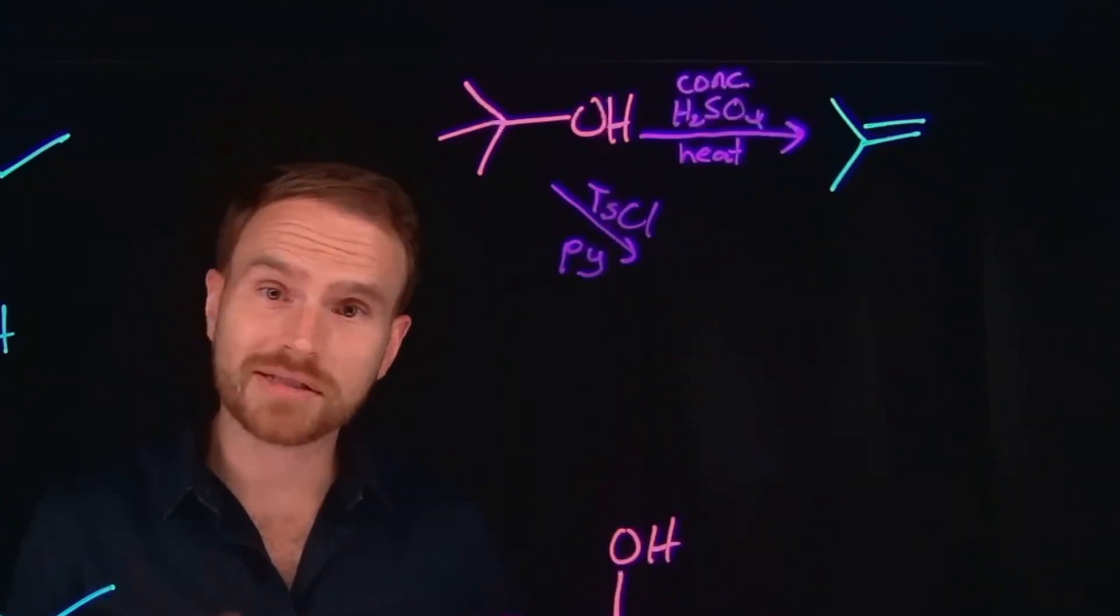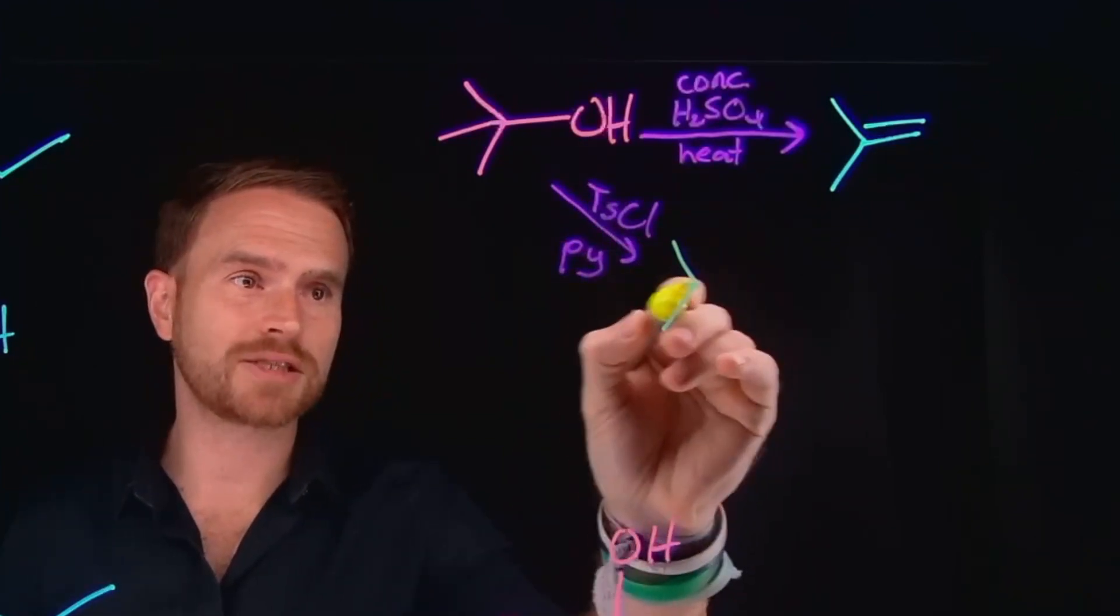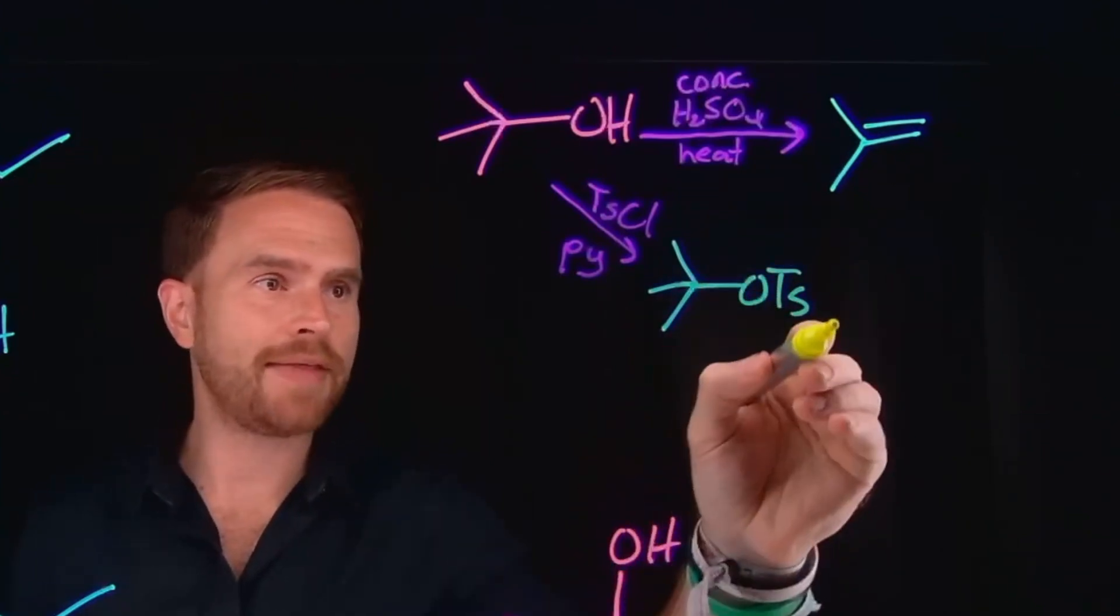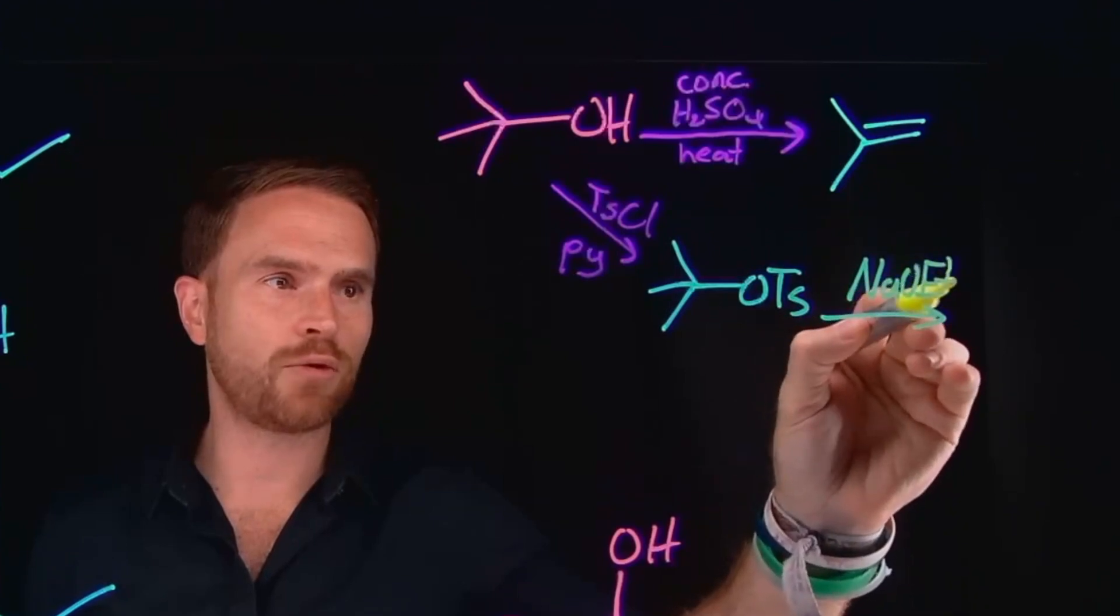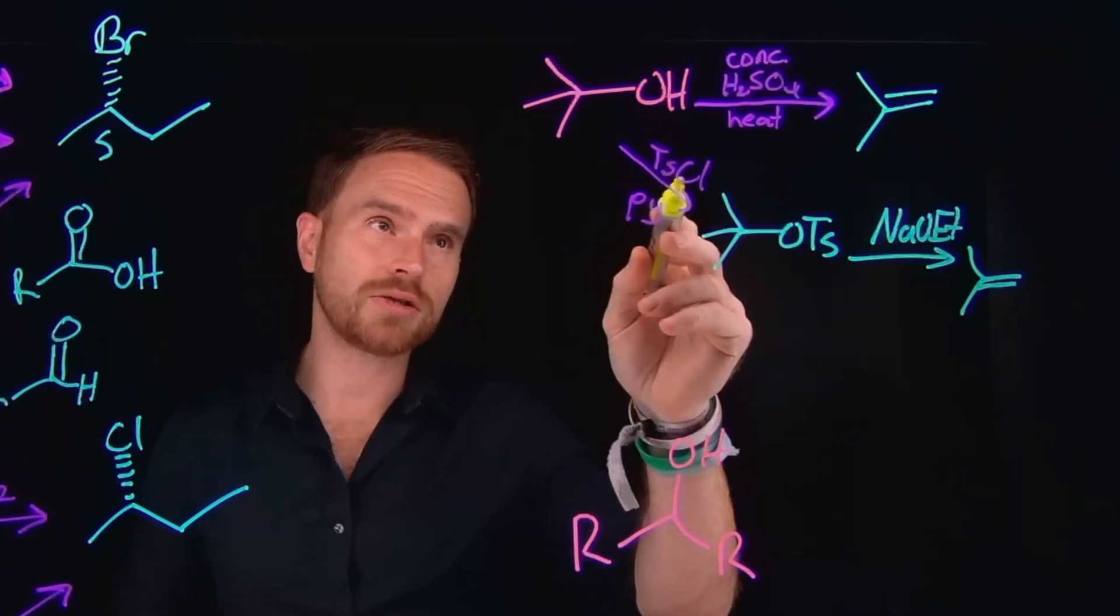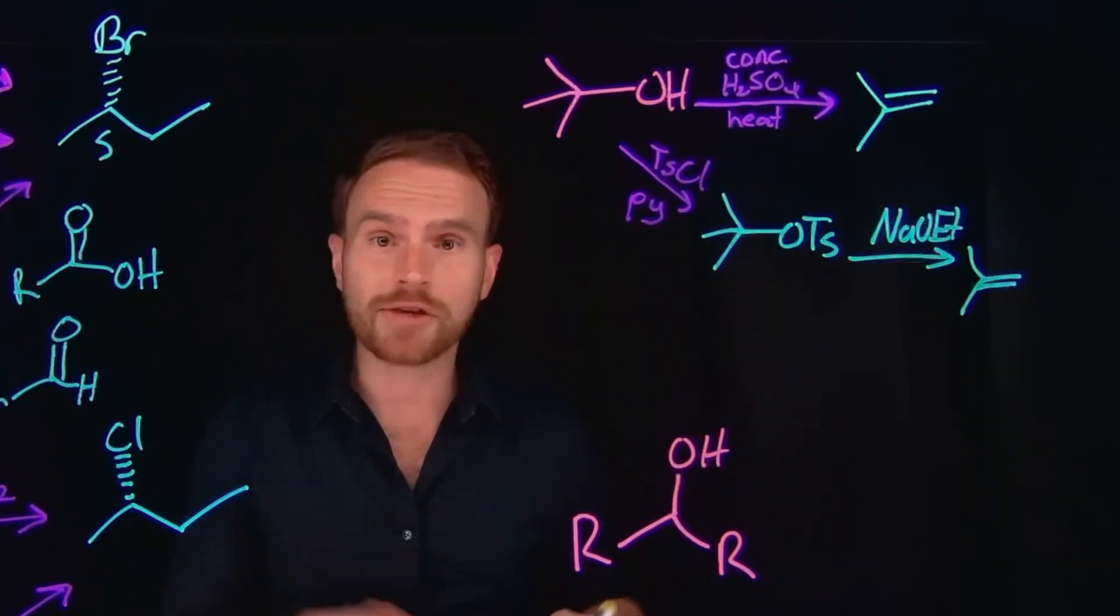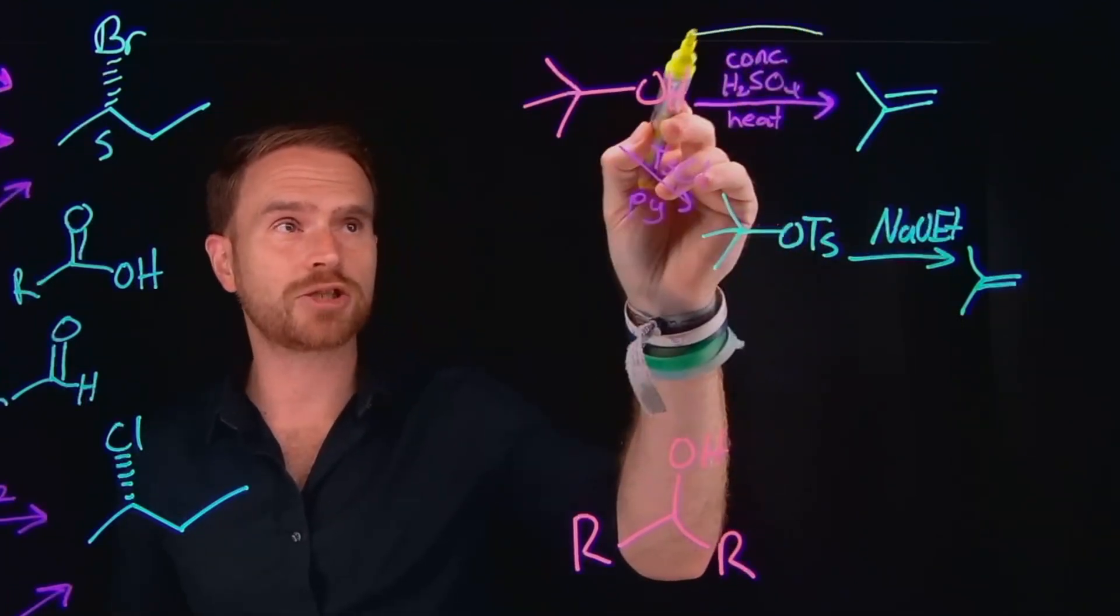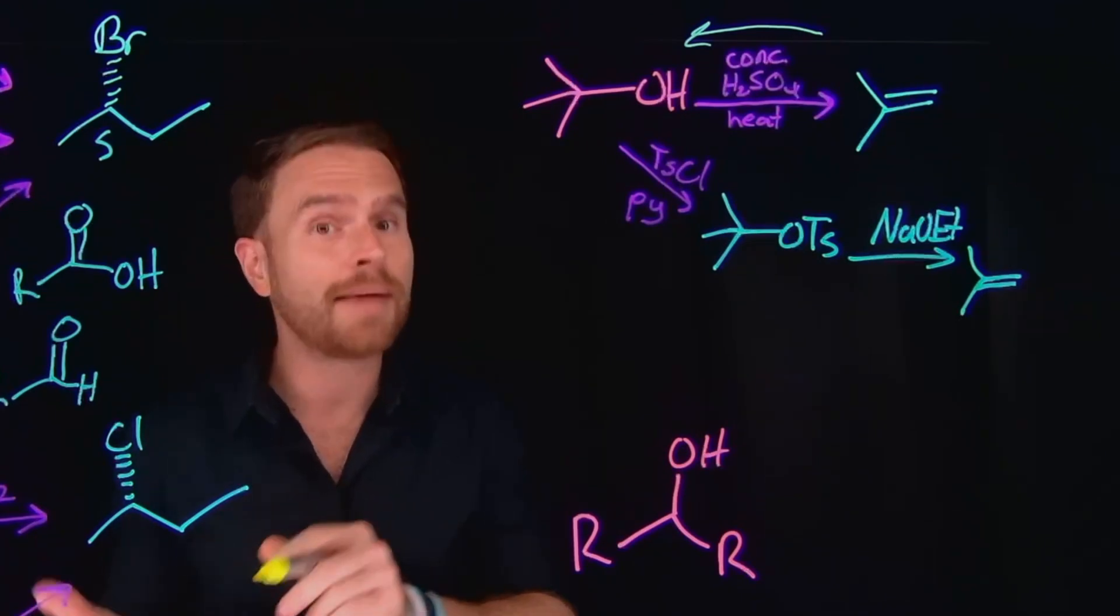Another way that you could do this is a two-step process. That's first by turning this alcohol into an OTs group, called etosylate for short. Then subsequently, if you add something like sodium ethoxide, you will do the full elimination where you end up generating the exact same product as before. The reason you might want to do this is because sulfuric acid could potentially be hydrating things that you don't want it to hydrate. Remember, this is actually a reversible reaction. Depending on how much sulfuric acid is in there, you can actually go from the elimination alkene back to the alcohol.